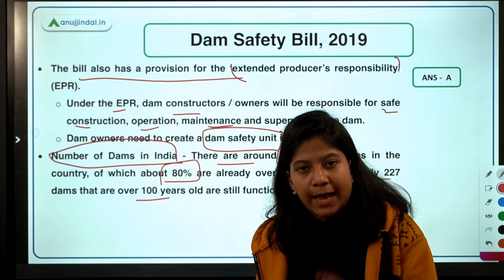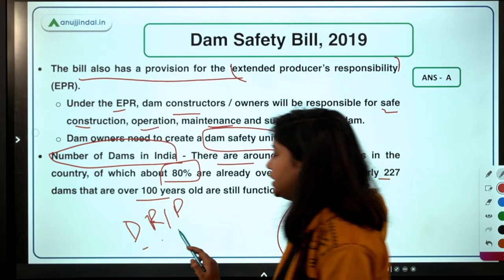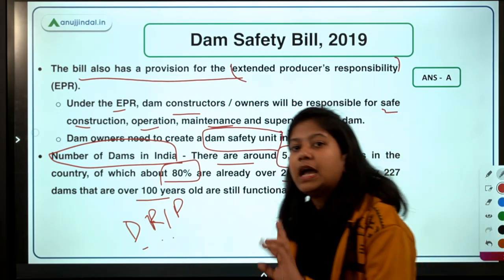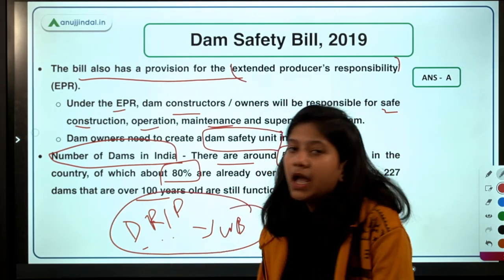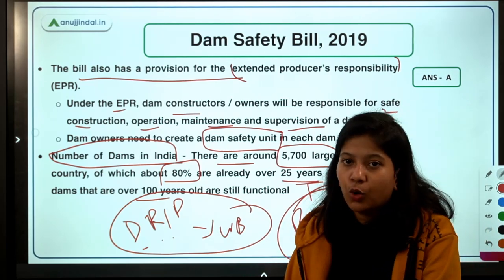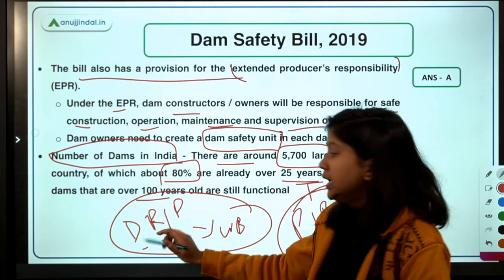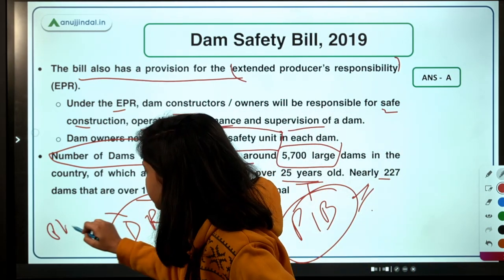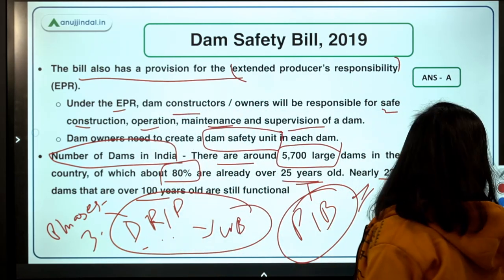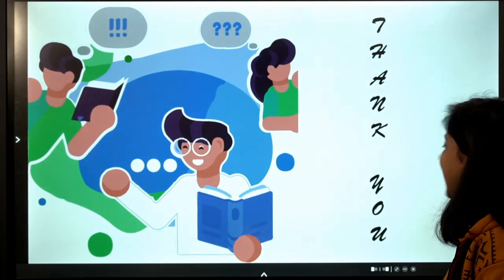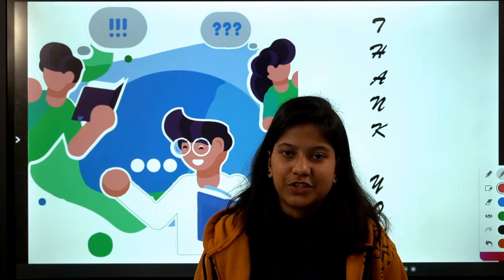You should know about the DRIP project — Dam Rehabilitation and Improvement Programme — launched by the central government in collaboration with the World Bank to ensure safety and rehabilitate older dams. Your task is to find the cumulative budget across all three phases of this project and share it in the comments. If you liked the content, please subscribe and hit the bell notification. Thank you!